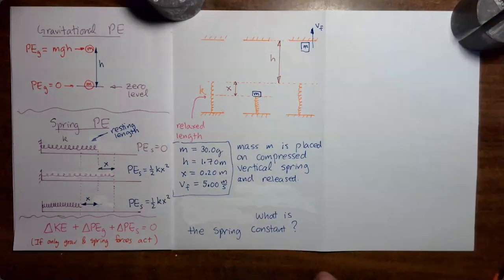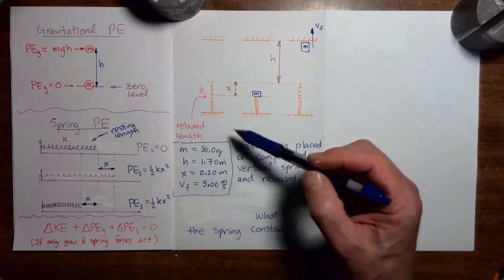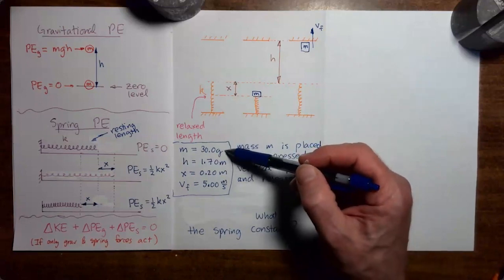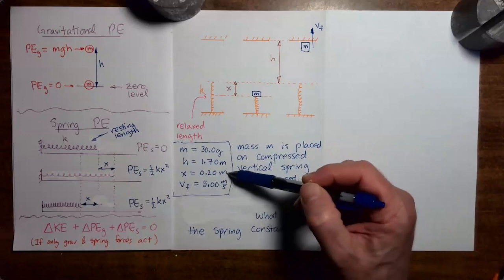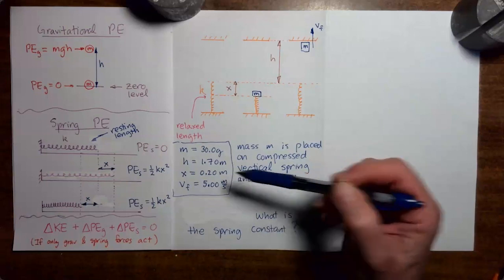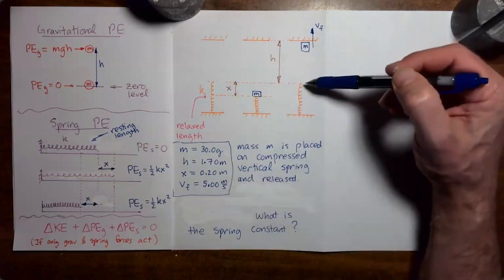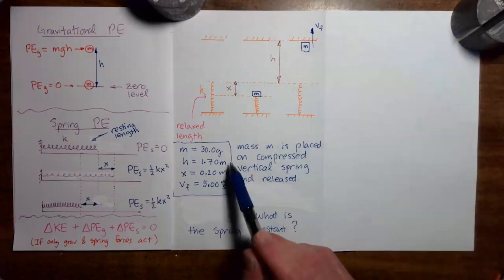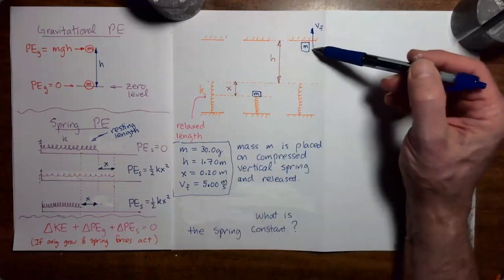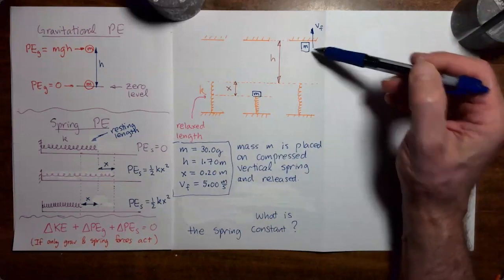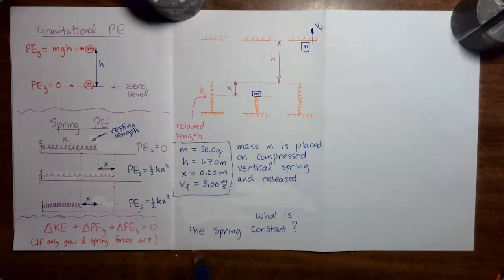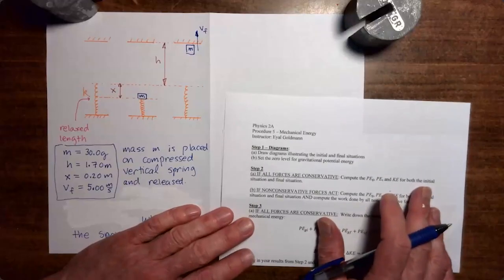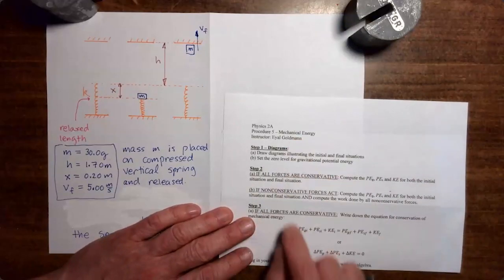We are given the speed of the mass right before it hits the ceiling, and from all of this information we would like to determine the spring constant. The given information: the mass is 30 grams, the compression of the spring is 0.20 meters, the vertical distance from the resting position of the spring up to the ceiling is 1.7 meters, and the speed of the mass just before it hits the ceiling is 5 meters per second. We want to find the spring constant using our handout for mechanical energy problems.